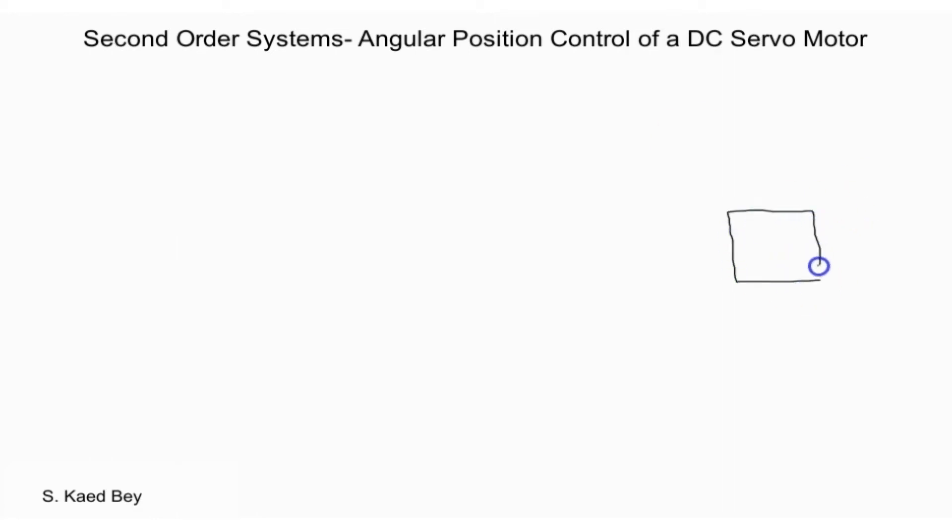In the previous series of videos we have compared the time responses and steady state errors for the first order water tank level control system for both the continuous S and the discrete Z domain. Here we extend this analysis to the second order system.